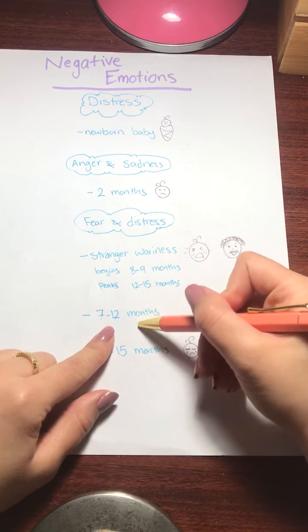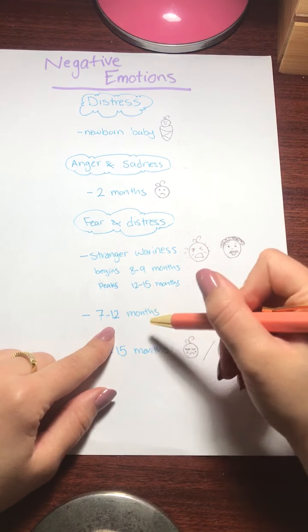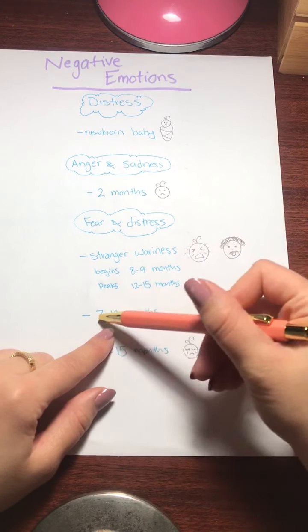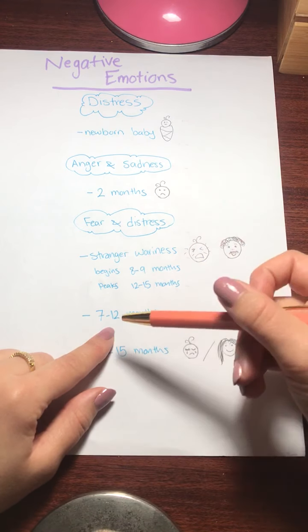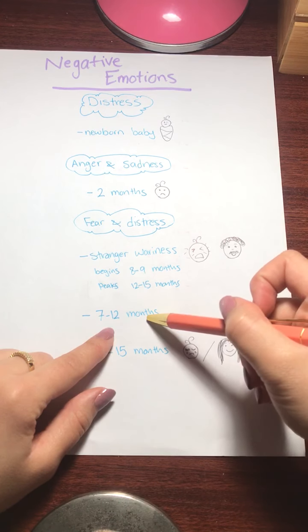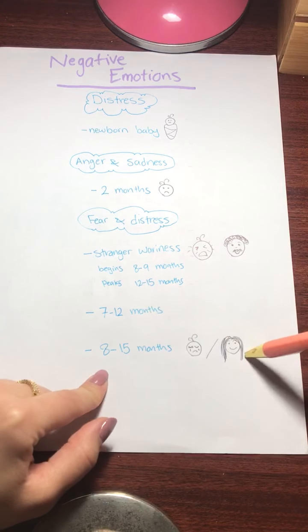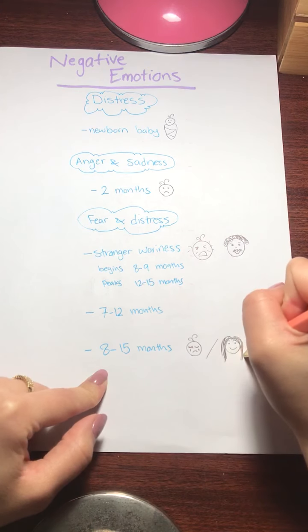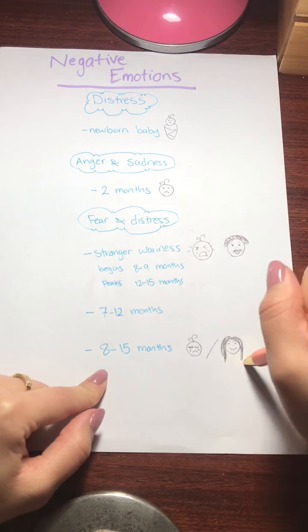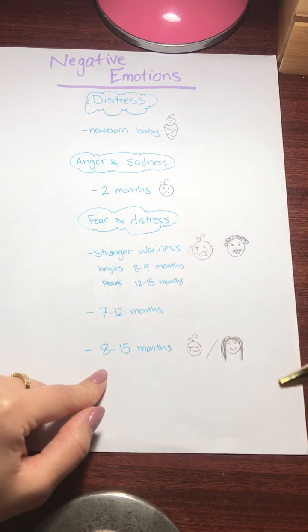By seven to 12 months, your baby will show display fear of novel toys, different sounds. It's not just people. By seven to 12 months, there might be a scary dinosaur toy that just totally scares them and makes them upset. And by eight to 15 months, your baby will start to display separation anxiety. They don't want to be away from you. They get sad. When is mommy coming back? That's about eight to 15 months.